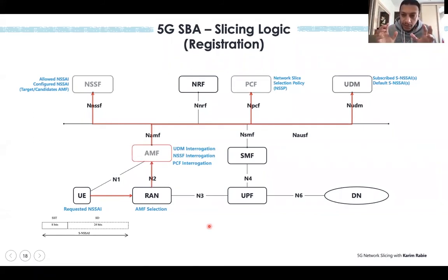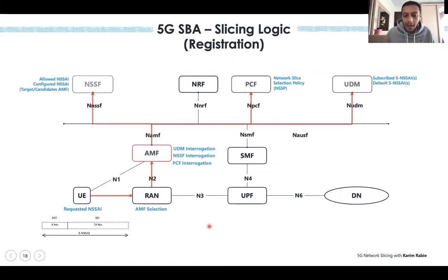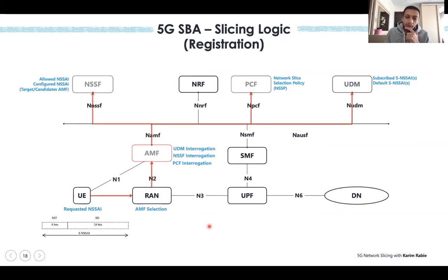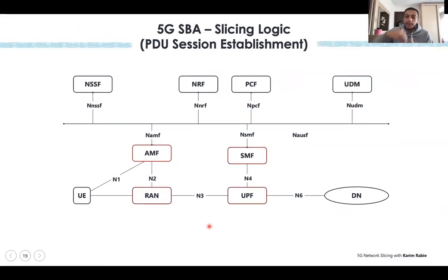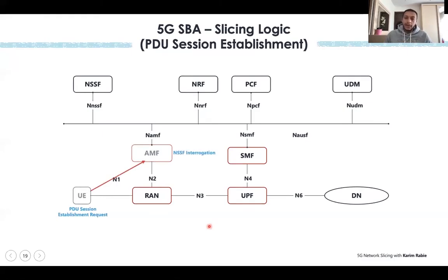At the end of registration, we've dedicated an AMF for the UE — we know the UE on slice 5 is served by this AMF. What remains is establishing a PDU session to assign the right SMF and UPF. This happens in PDU session establishment, which is a process after registration. The UE sends a PDU Session Establishment Request, which goes to the AMF. The AMF then needs to select the right SMF — the one that exists on the slice assigned to this UE — so it goes to the NSSF.